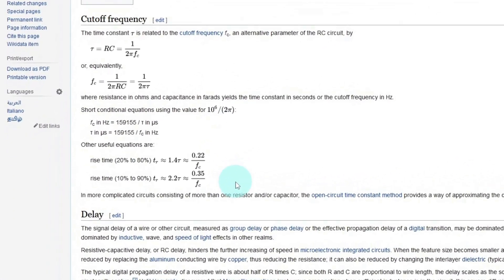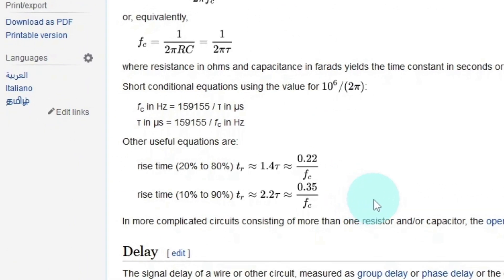Here's the RC time constant page in Wikipedia. If you scroll down, you'll see that 0.35 number is for the rise time between 10 and 90%. Let's go figure out where the 0.35 numeric constant comes from.